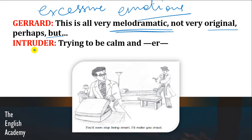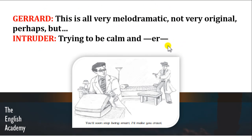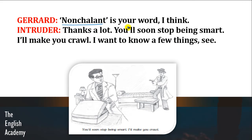Aur abhi woh bol hi raha hota hai ki intruder usse interrupt karke kehta hai: 'Trying to be calm and... uh.' Ab intruder kehta hai ki mein shaant rehne ki koshish kar raha hoon — aur aage woh koi word nahi bol paata, woh confused ho jaata hai. Toh Gerard kya kehta hai: 'Nonchalant is your word, I think.' Nonchalant means not showing anxiety, interest or enthusiasm. Gerard kehta hai ki tum apne aapko shaant aur disinterested show karna chahte ho — koi anxiety nahi, koi interest nahi, tum bade relaxed ho.